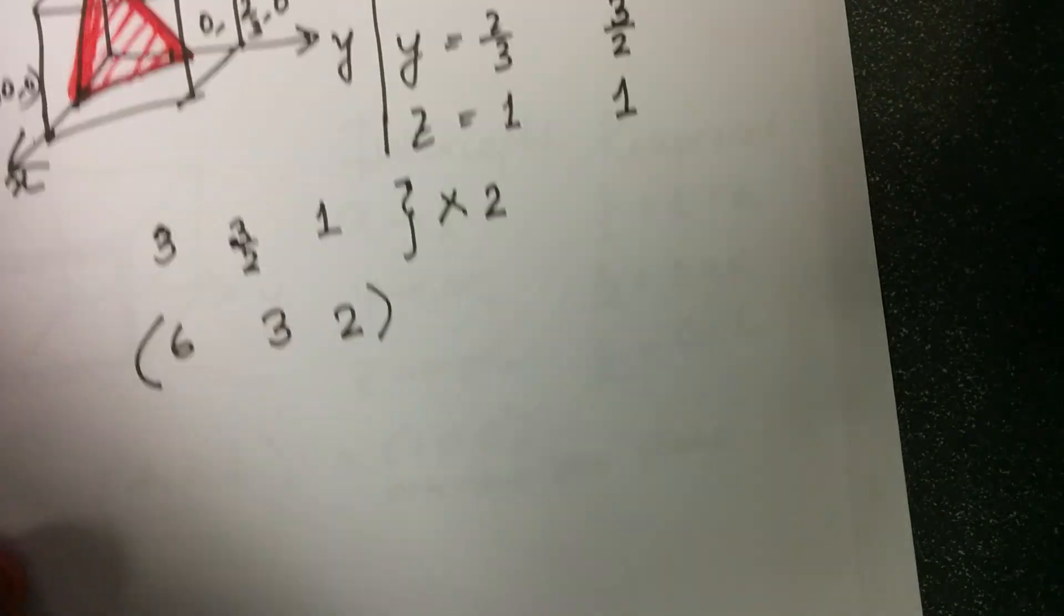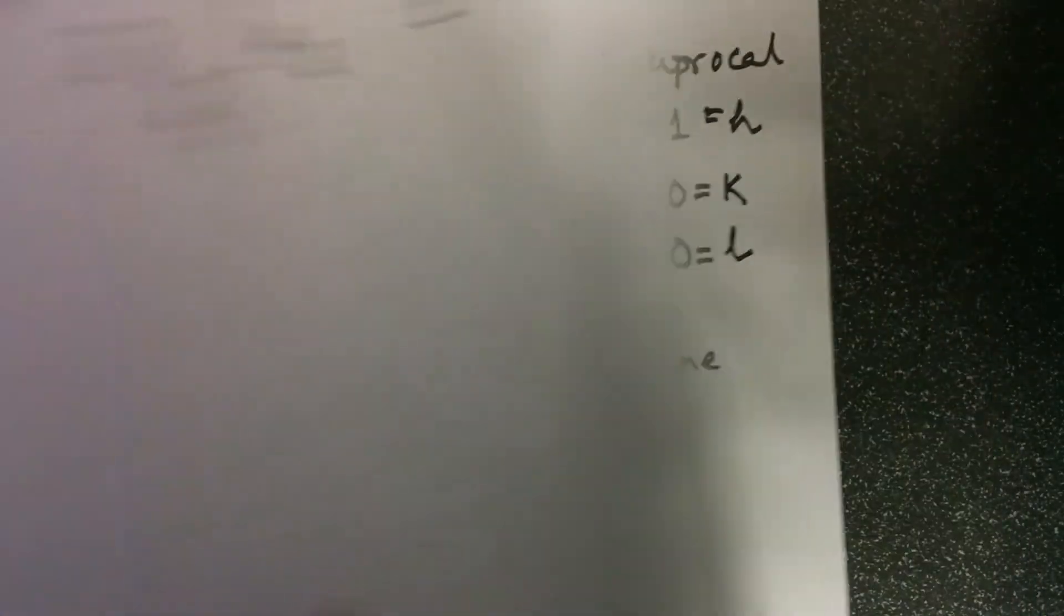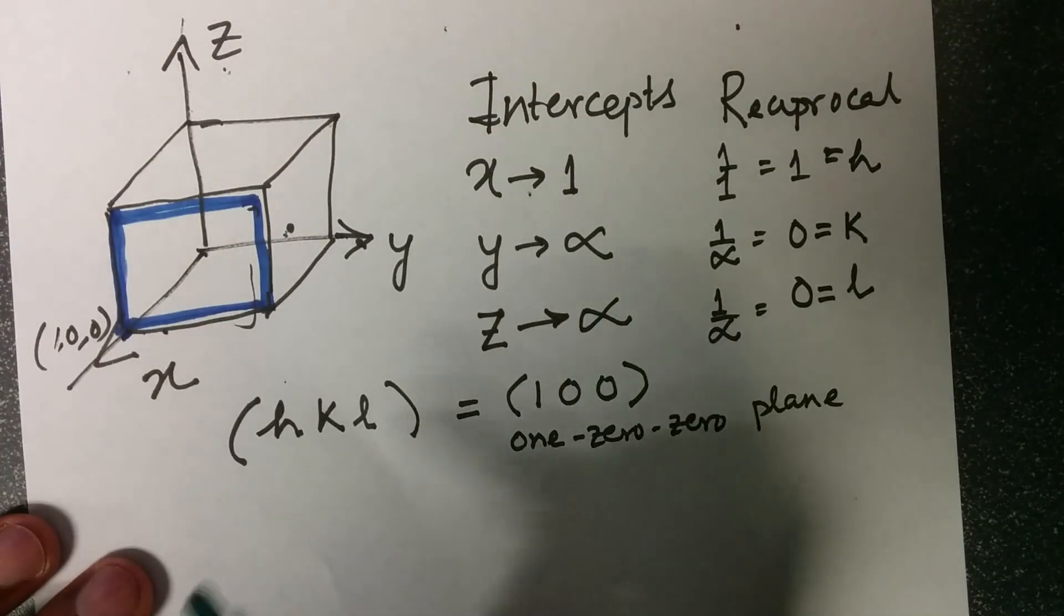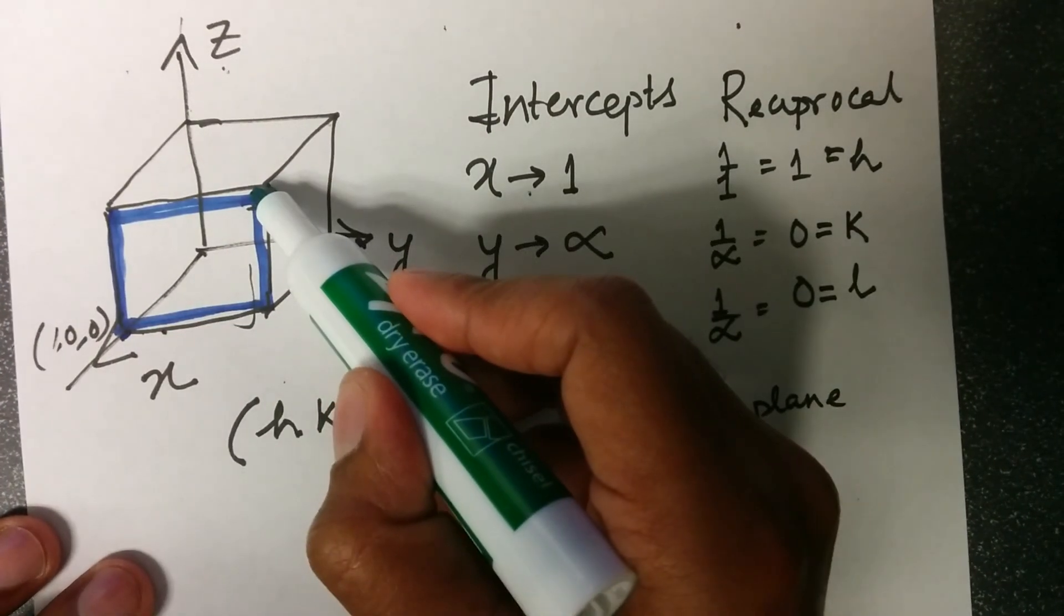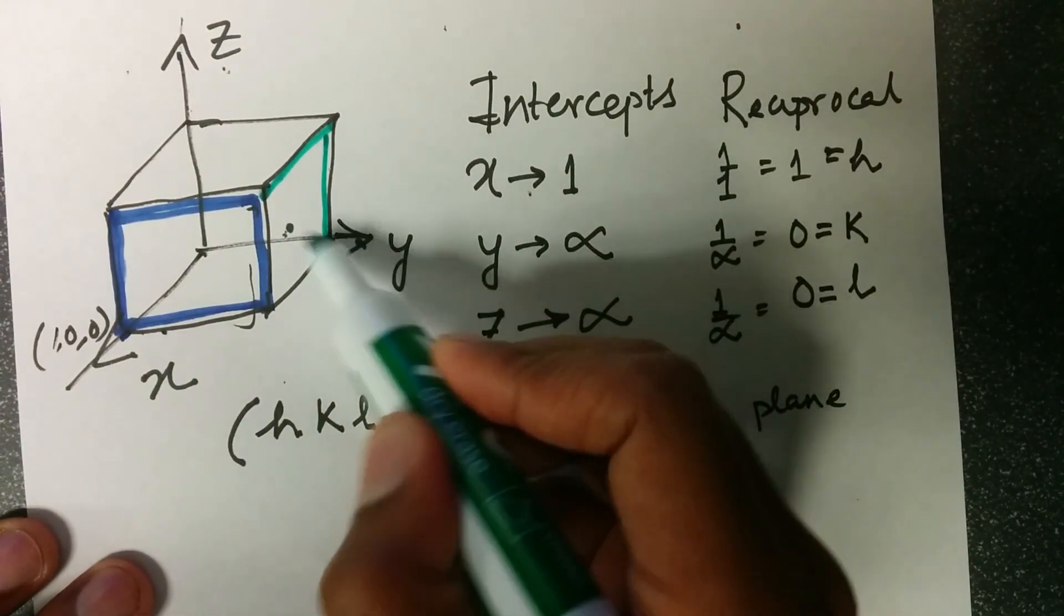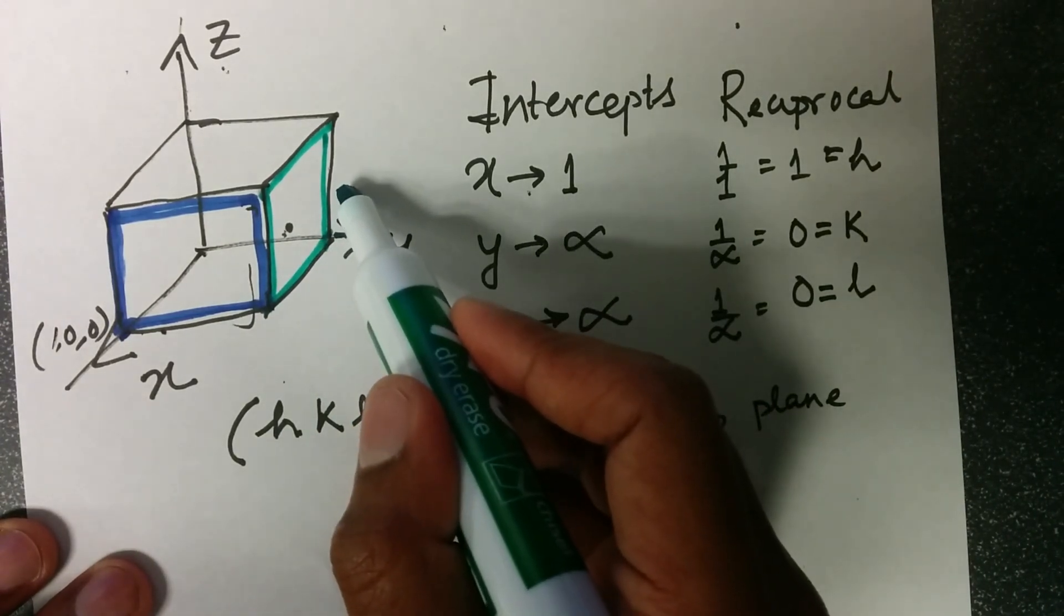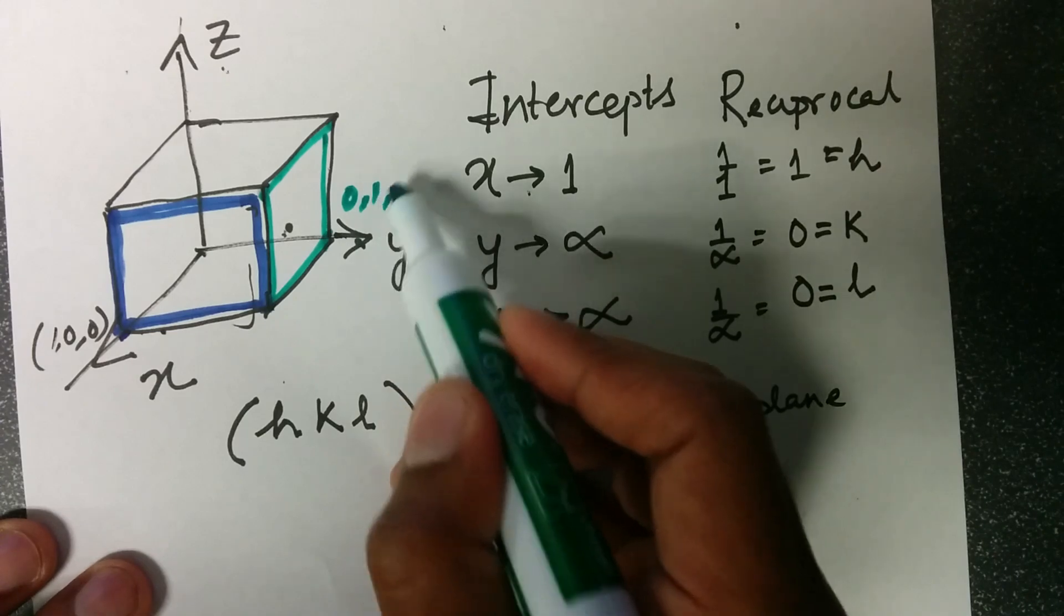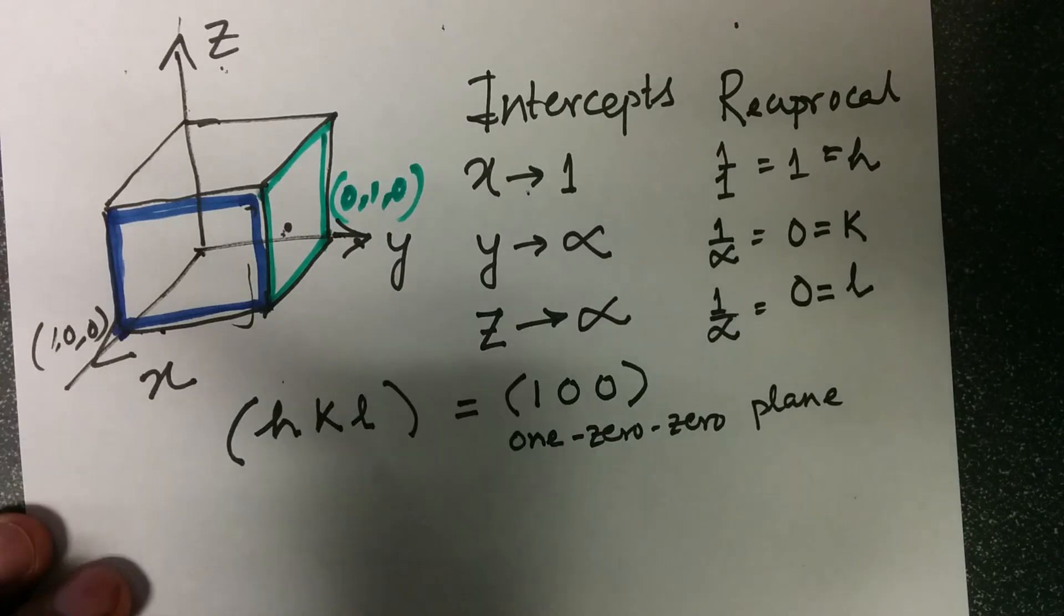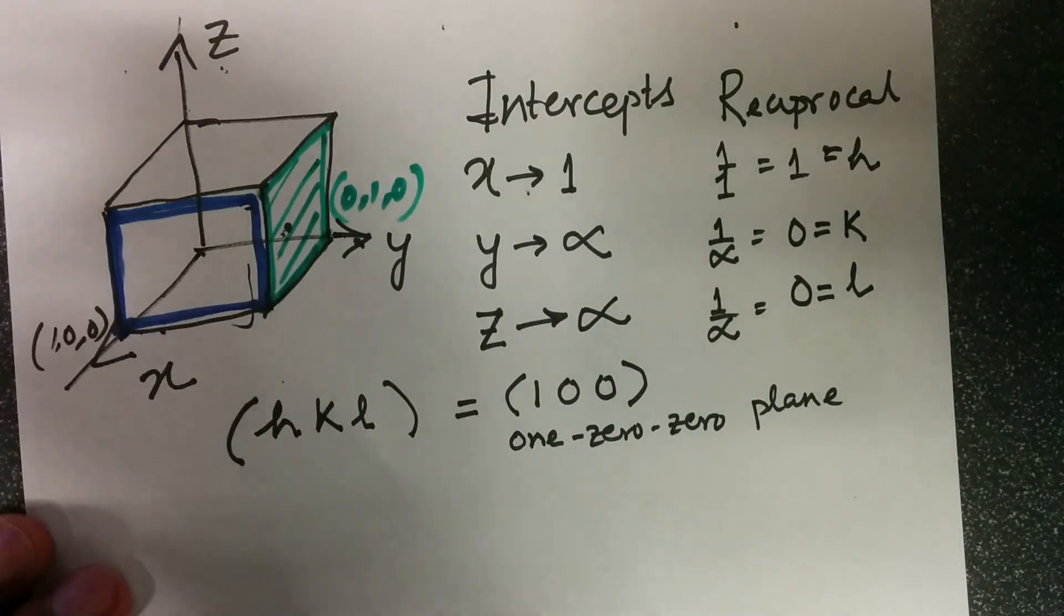We got the example of (1 0 0) plane as we saw earlier. However, what would happen if a plane was to become such that it intercepts the y-axis at y is equal to 1, or point is (0, 1, 0), and it is parallel to x-axis. This is the plane, and it is parallel to z-axis.